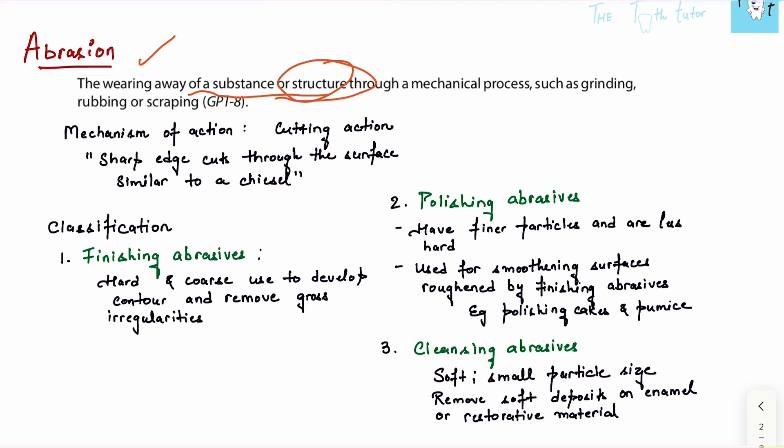Abrasion occurs through mechanical processes such as grinding, rubbing, or scraping. If I have a structure like this tooth, the removal of the surface through grinding, rubbing, or scraping is called abrasion. Basically, removing the surface is called abrasion.